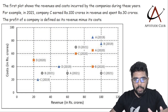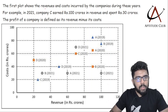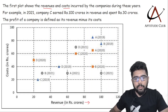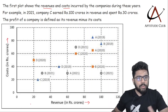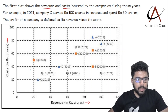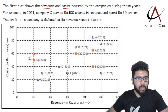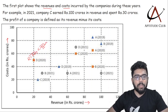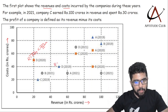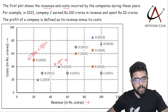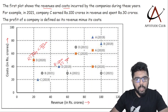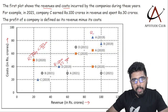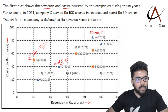The first graph is kind of a scatter plot. The x-axis indicates revenue — overall sales — and the y-axis indicates cost. For example, taking point D: the revenue of D is 20 crores whereas the cost of D is 45 crores. For B, the revenue is around 50 crores whereas the cost is around 40 crores. For point A in 2019, the revenue is 90 crores and the cost is around 85 crores.